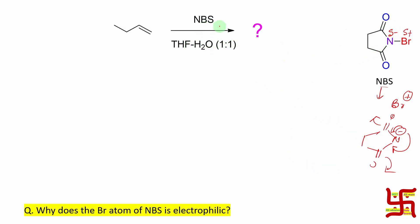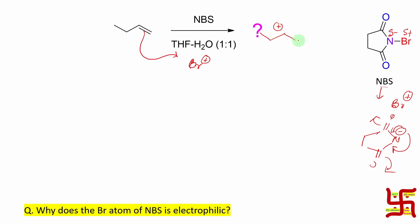So NBS is a source of electrophilic bromine — bromine-plus. What will this bromine-plus do? It will react with the pi bond because of the loosely bound or lumpy electron cloud. It will attack and produce a carbocation with bromine attached here.